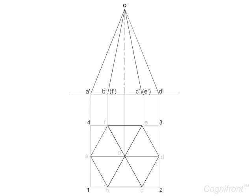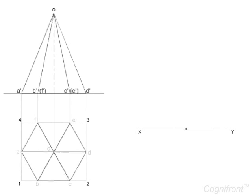For this, first enclose the plan view of the pyramid in a rectangular box 1, 2, 3, 4. Then from any point 1'' on reference line, draw lines 1''-2'' and 1''-4'' making angles of 30 degrees with the line XY.